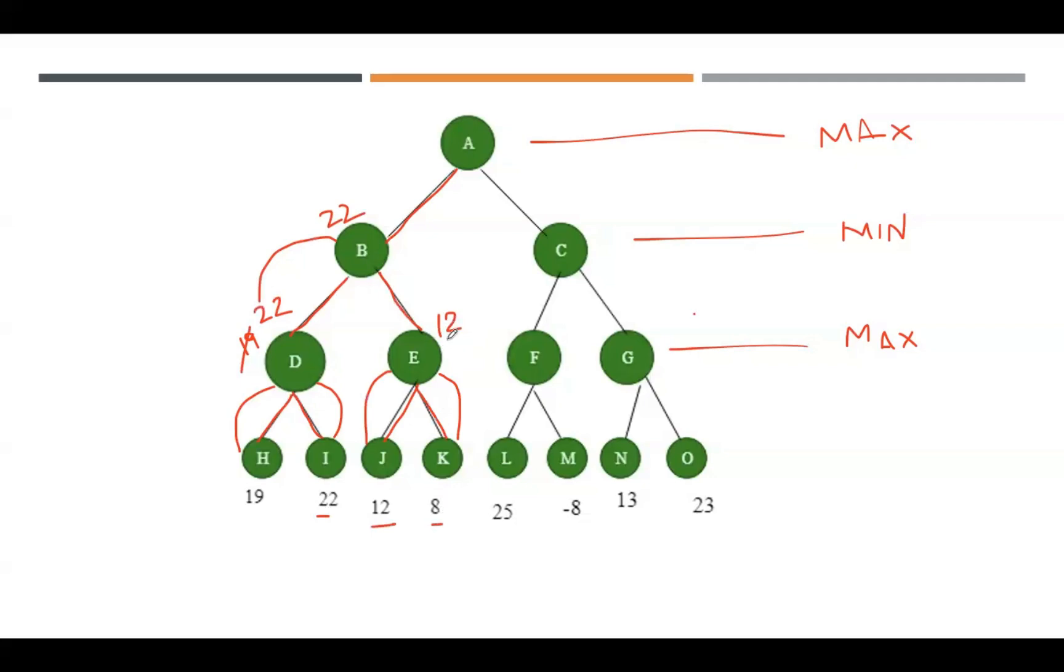Now, among 12 and 22, this min node considers the minimum value. Among 12 and 22, the minimum value is 12, so remove 22 and place 12 at node B.